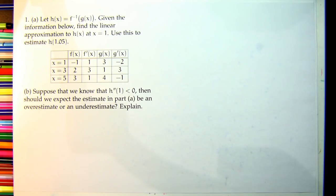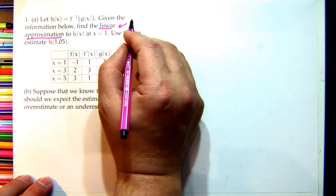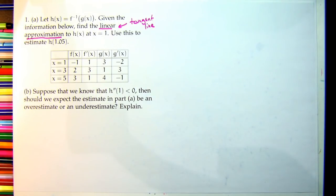Problem 1: h(x) = f-inverse(g(x)). We don't know f and g completely — we're given a table of sampled values. We want to find a good linear approximation to h(x) at x = 1. Whenever you see 'linear approximation,' substitute that with 'tangent line.' The linear approximation at x = 1 has the form: h(1) + h'(1)(x − 1). We'll fill that in step by step.